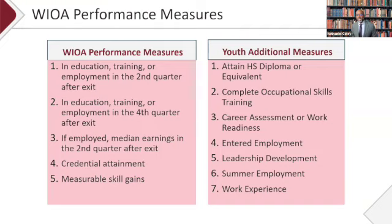Our team, the Division of Indian and Native American Programs, provides grants to about 166 organizations across the country — shown on the map as dots indicating where many of our organizations are located. We distribute our funding on a four-year cycle, putting out a funding opportunity announcement every four years for Indian, Alaska Native, or Hawaiian organizations to apply, and then distributing awarded amounts on an annual basis.